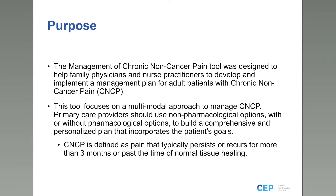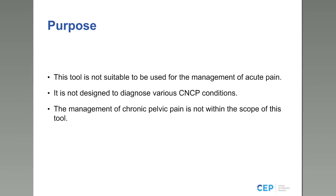For our discussion, chronic non-cancer pain or CNCP is defined as pain that typically persists or recurs for more than three months, or past the time of normal tissue healing — fairly standard definitions from the IASP. The tool is not designed for management of acute pain, nor to diagnose conditions such as fibromyalgia, chronic daily headaches, or neuropathic pain syndromes — rather the focus is on management. The tool is also not well structured for chronic pelvic pain, which is out of scope due to its complexity.